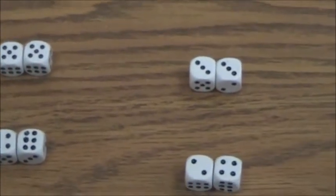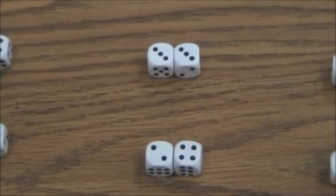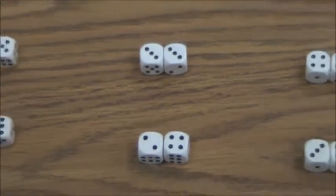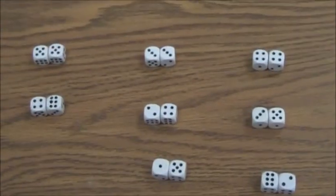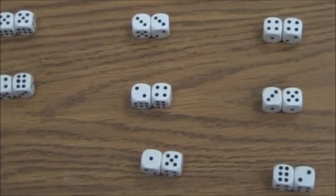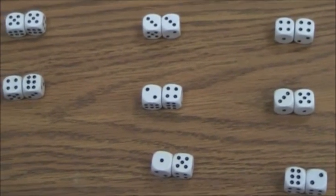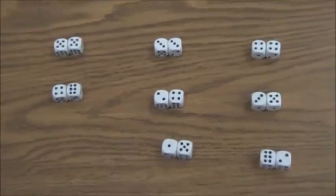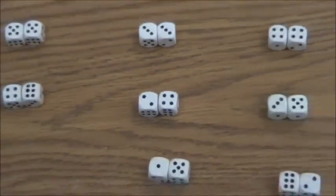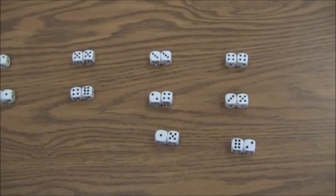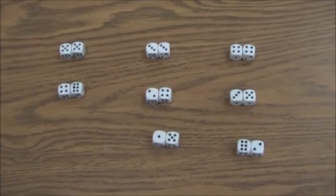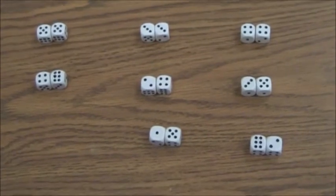Now over here, up at the top, we have a hard six, and that's three by three. Right below it, we have what is called soft sixes. That's two by four or four by two.